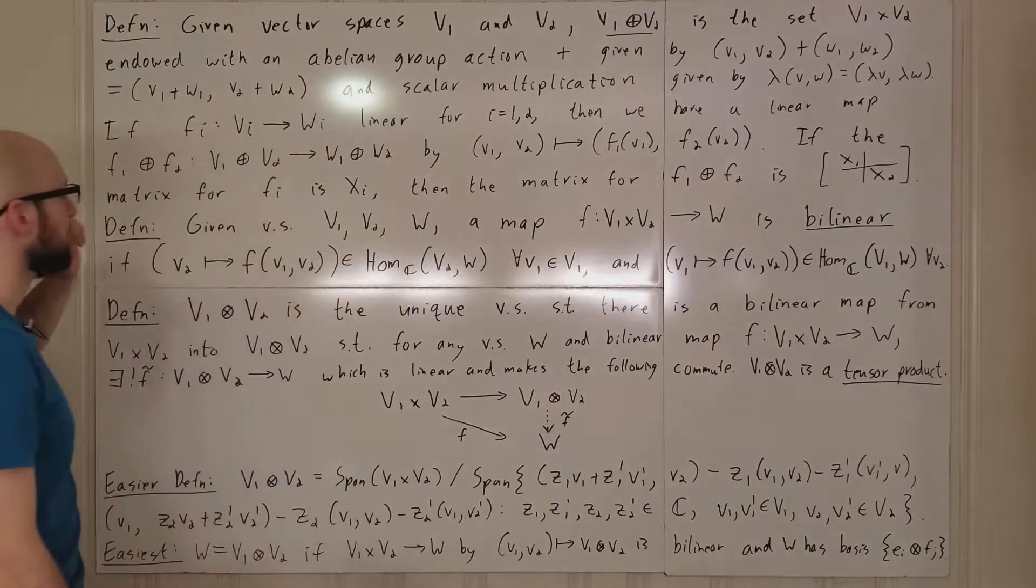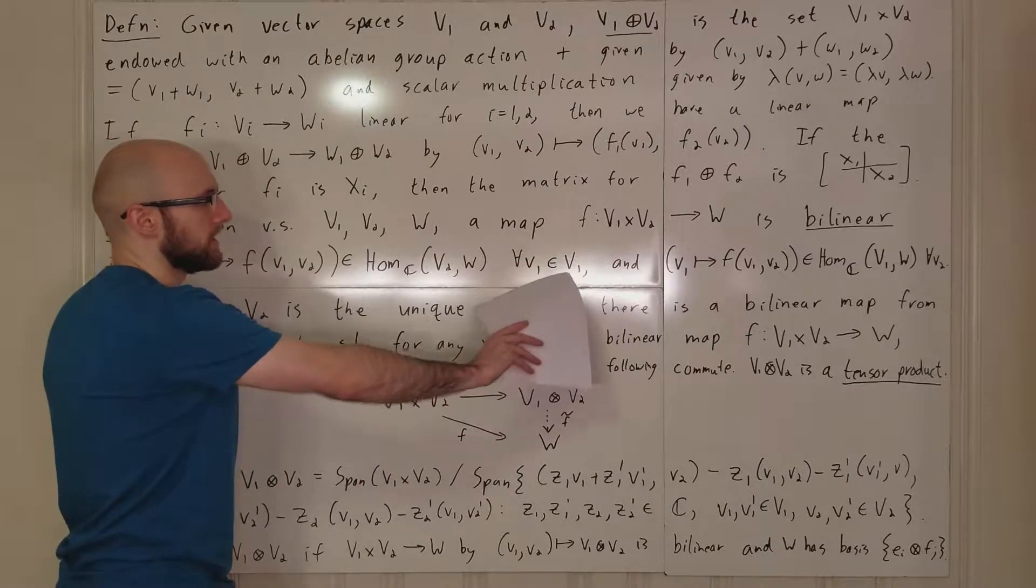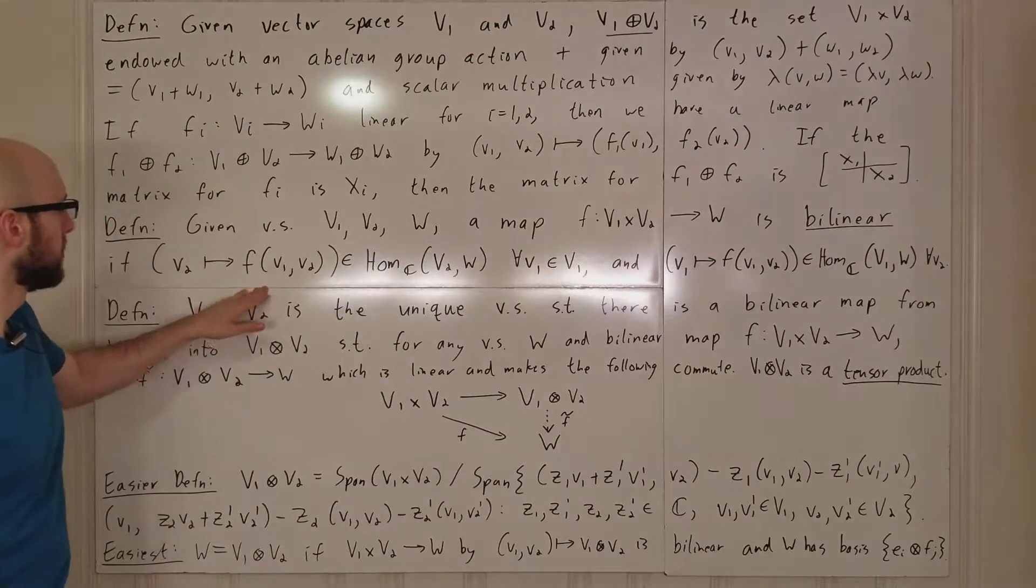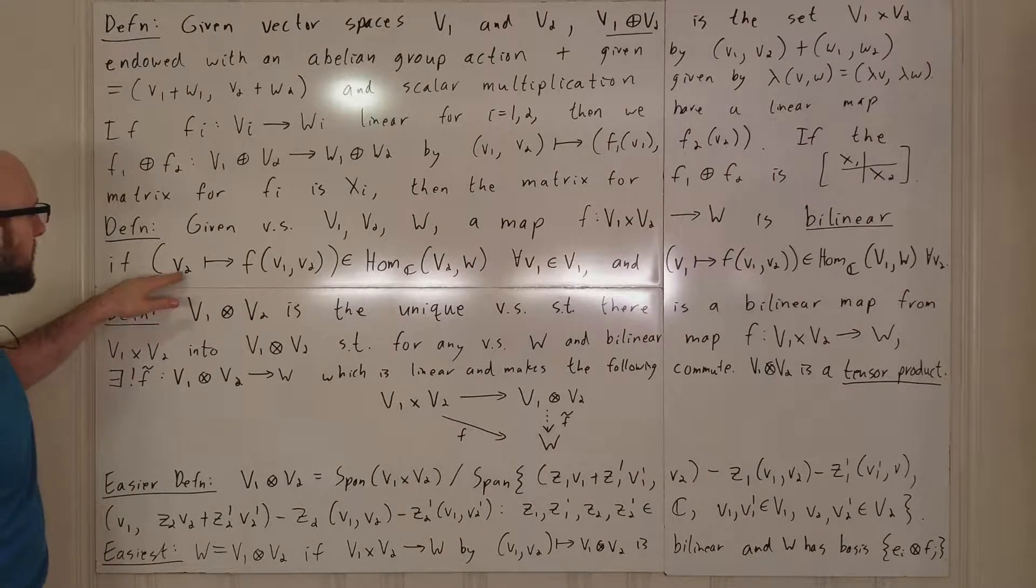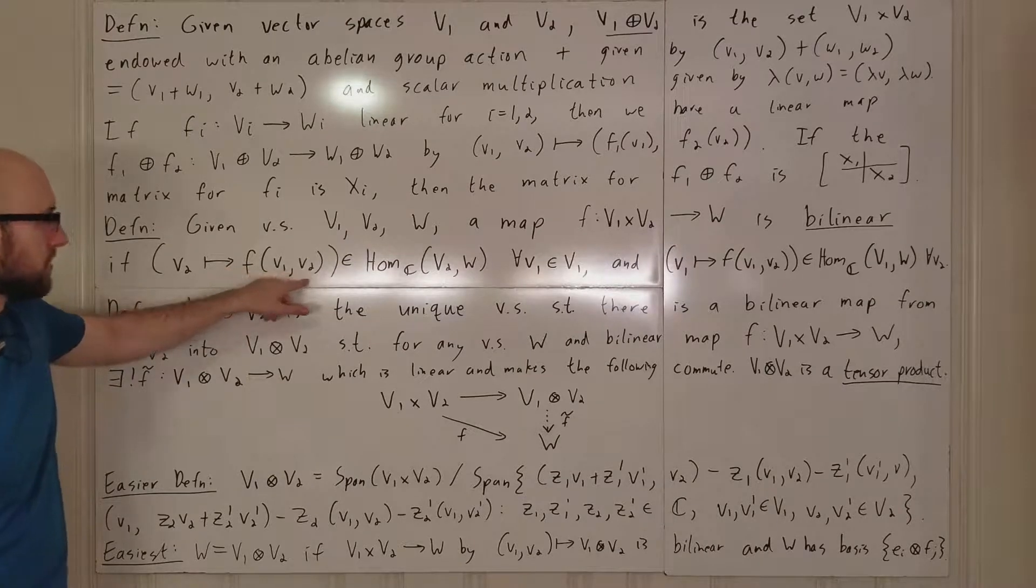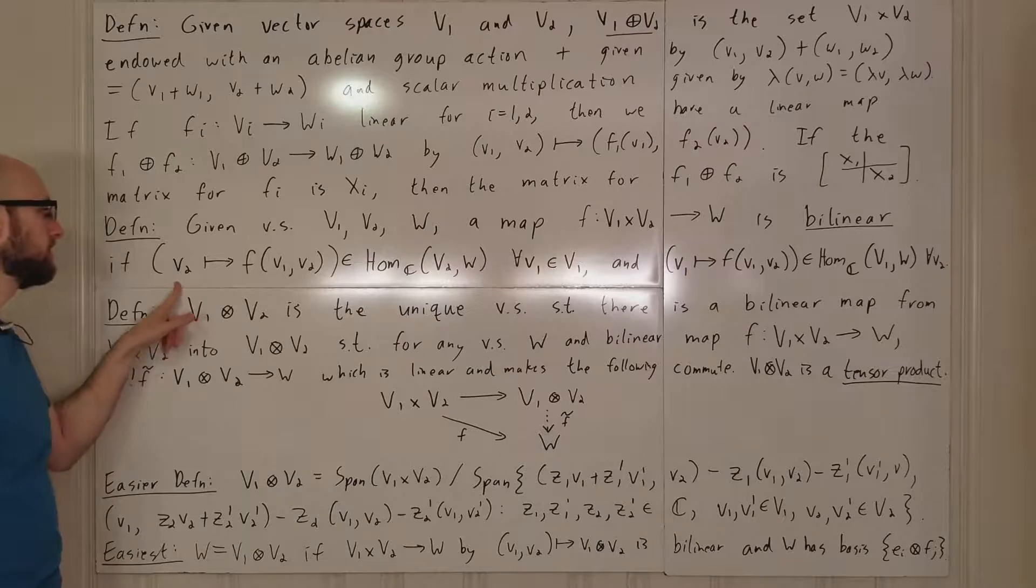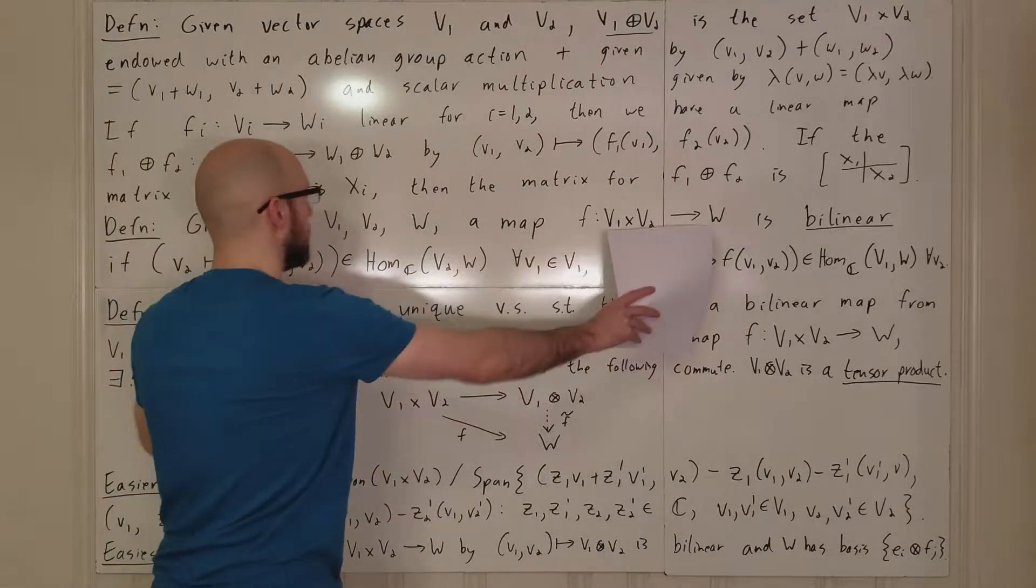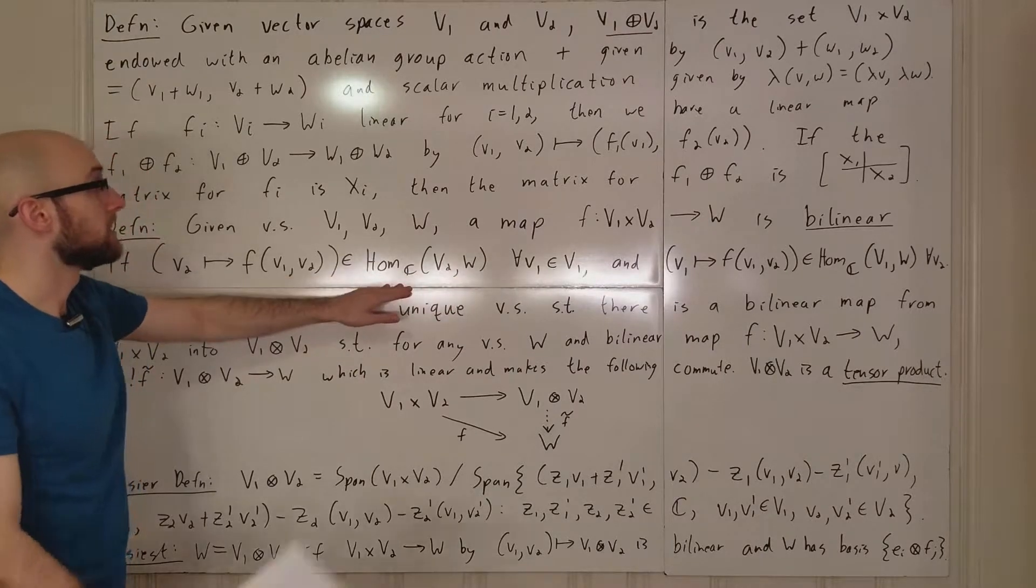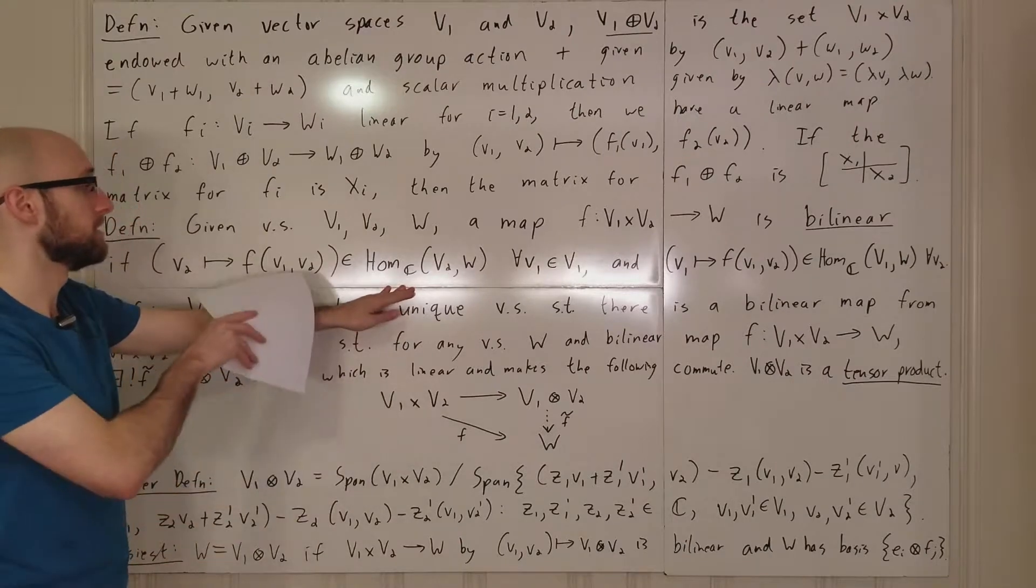if you fix V1 in capital V1, then you can consider the map sending V2 into whatever F evaluated at V1, V2 is where V1 is fixed. This is in capital V2, and this is in W. And so this is a map from V2 to W, and for it to be bilinear, this has to be a homomorphism, i.e., this needs to be a linear map.